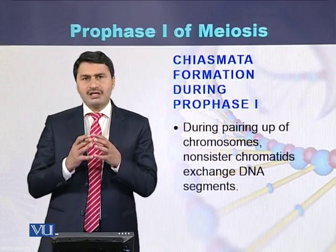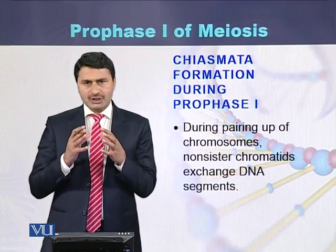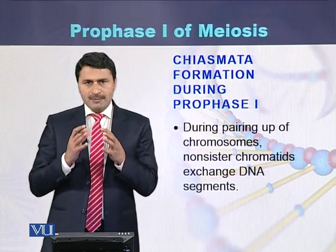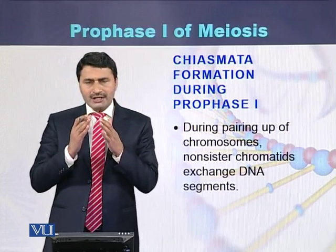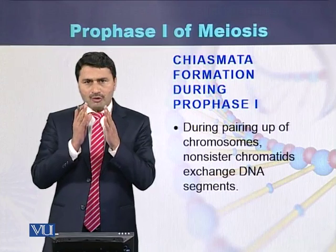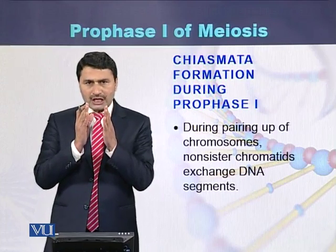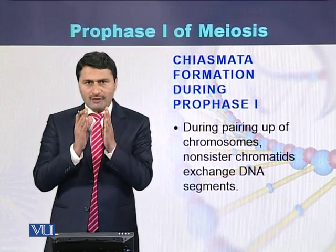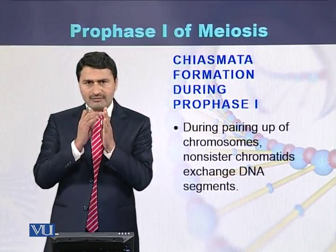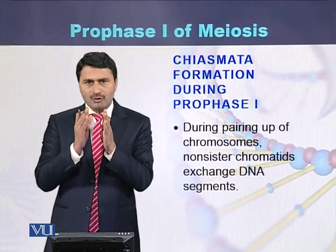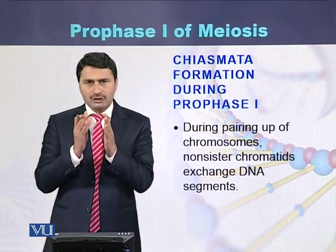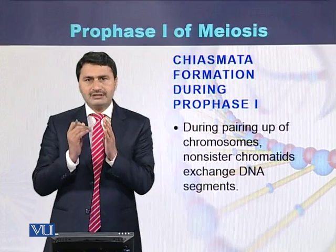During Prophase I, a process called chiasmata formation occurs. Chiasmata is a process in which the chromatids of homologous chromosomes — which are not the sister chromatids — cross over with each other. A chromatid of one homolog crosses with a chromatid of the second homolog. This process is called chiasmata, also known as crossing over or a recombination event.